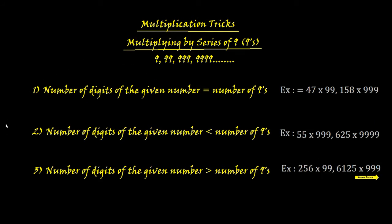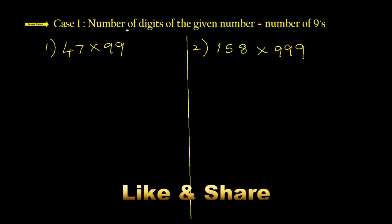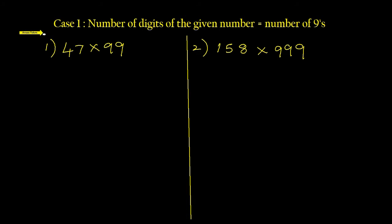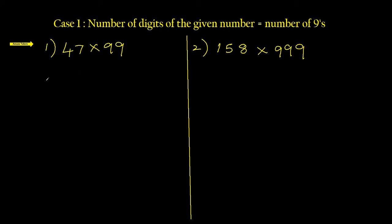We are going to see these one by one. Case one: when number of digits equals number of nines. I'll explain with two examples. Question one: 47 times 99. It's really easy — there will be two parts of the answer. First part: reduce one from this number, the preceding number, which is 46.